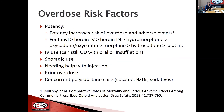Key risk factors for overdose are potency — with fentanyl being more potent and codeine being one of the least potent — IV use (though you can still overdose with oral ingestion or nasal insufflation), sporadic use because of loss of tolerance during periods of abstinence, needing help with injection, prior overdose, and concurrent use with another substance.